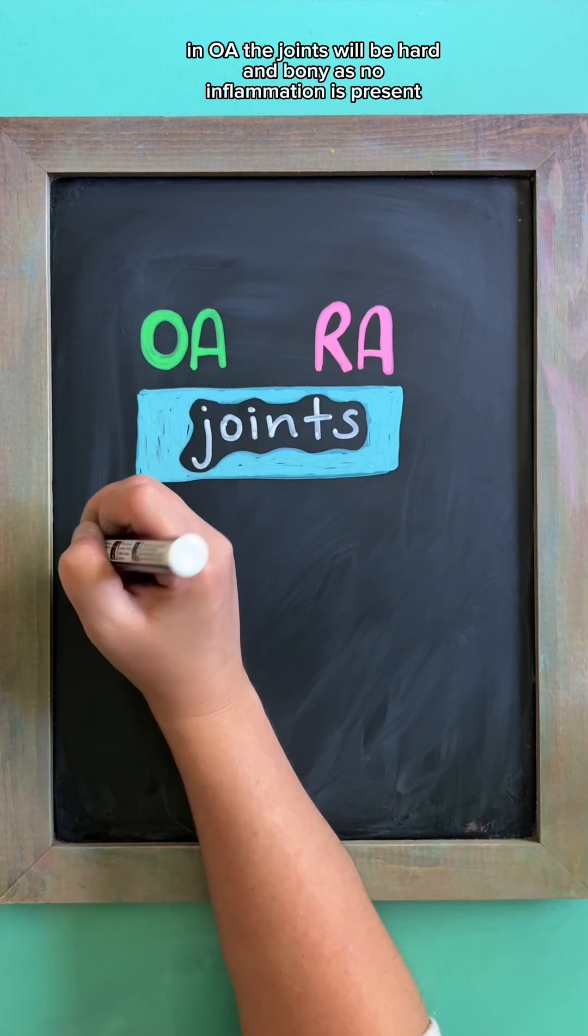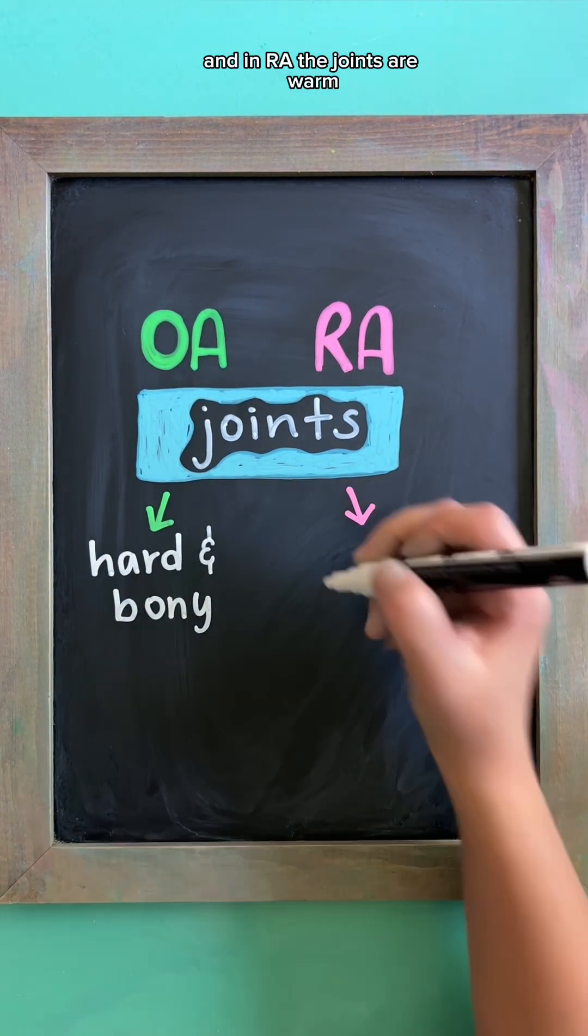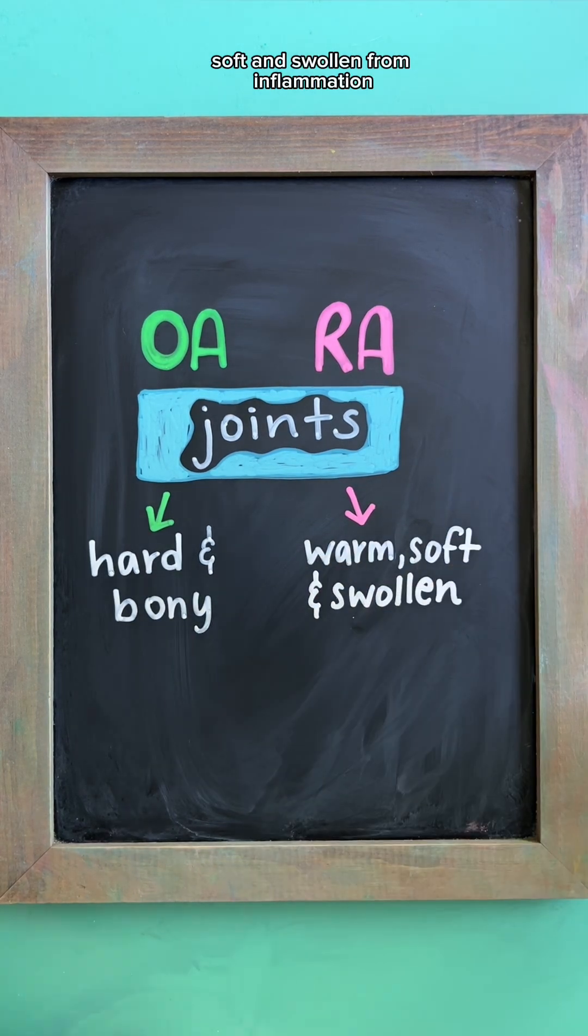In OA, the joints will be hard and bony as no inflammation is present, and in RA, the joints are warm, soft, and swollen from inflammation.